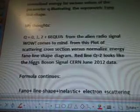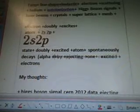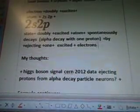So the formula continues. Fano plus line shape, electron scattering, helium auto-ionization. I'm going to add Higgs boson signal and we're going to add some laser beams with crystals and super lattice. Yeah, I found the new word, super lattice, because it actually just talks about what this thing does. Mesh, and then we're going to add electron doubly excites the atoms to 2S2P state. Doubly excited atoms spontaneously decays. So we're going to alpha decay with one proton by ejecting one excited electrons plus one proton.